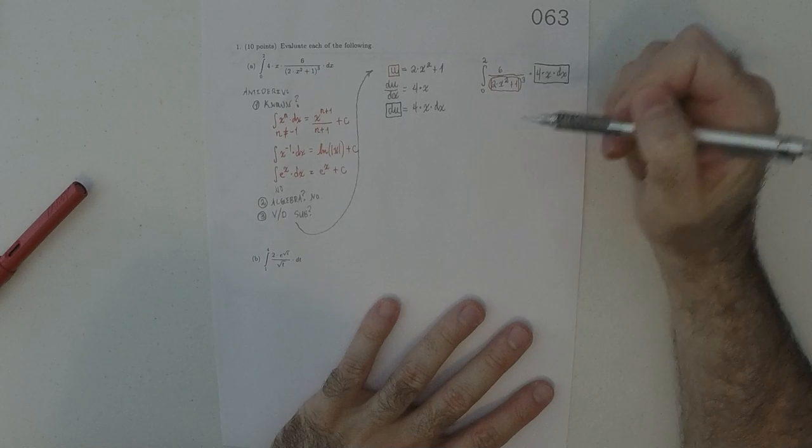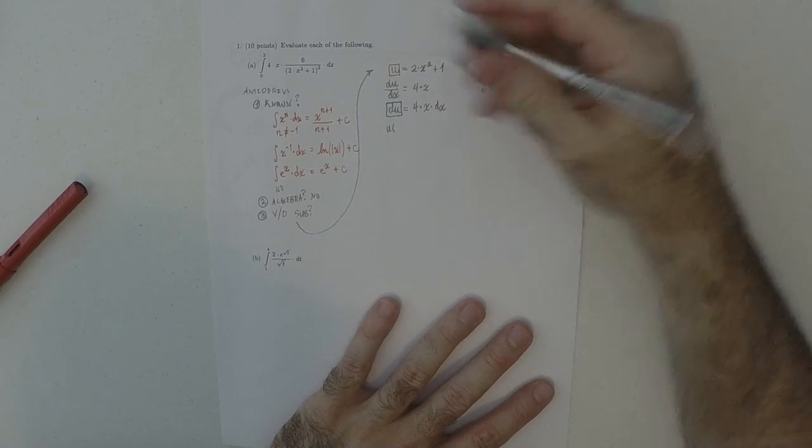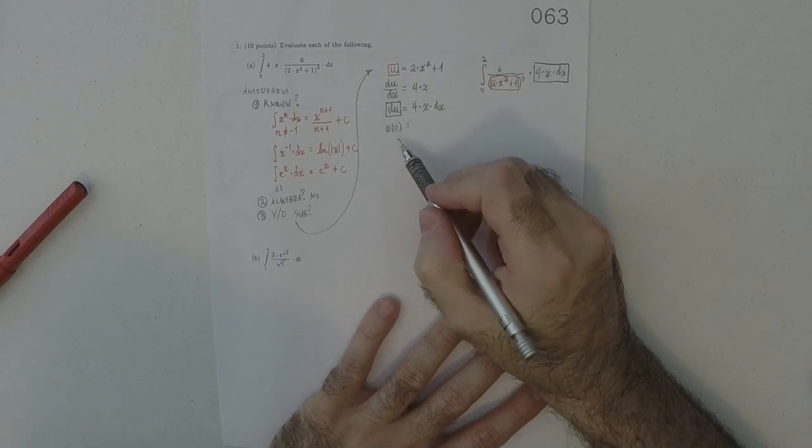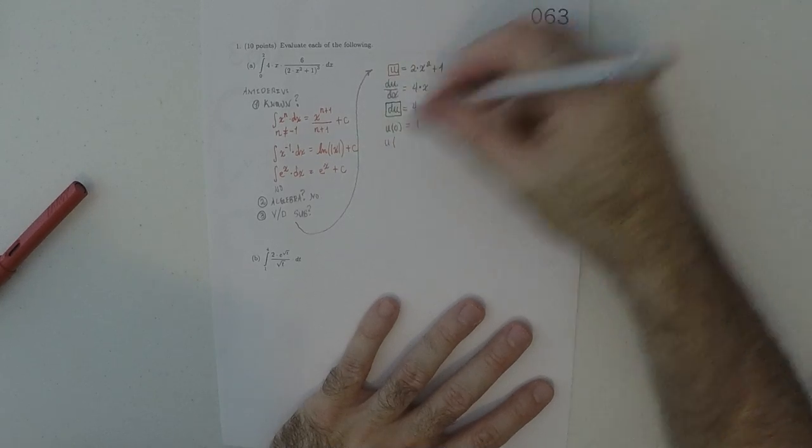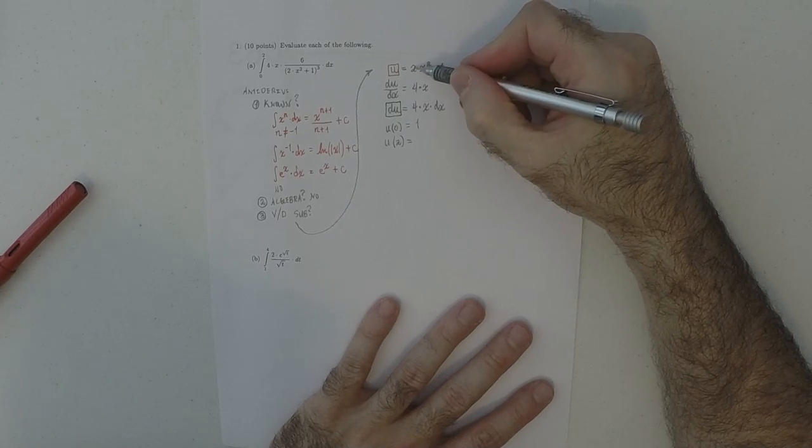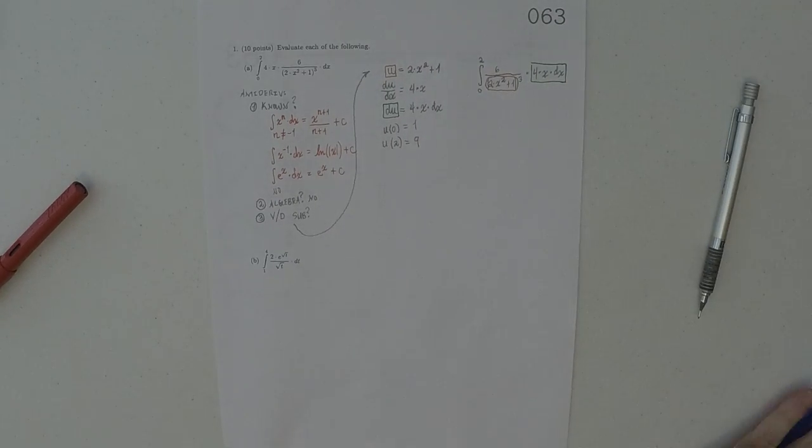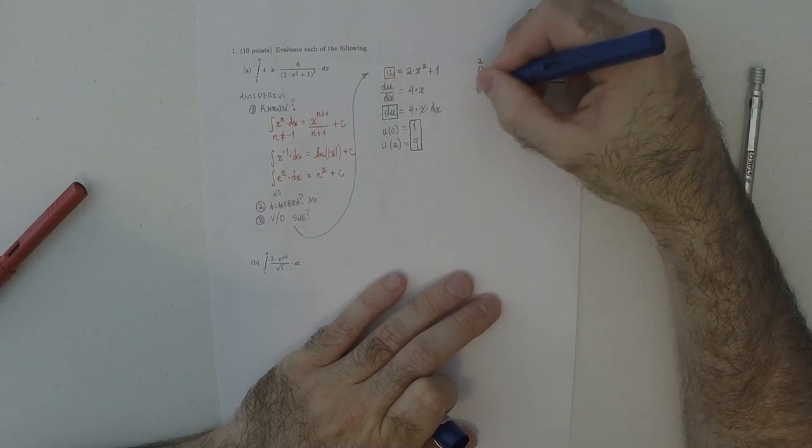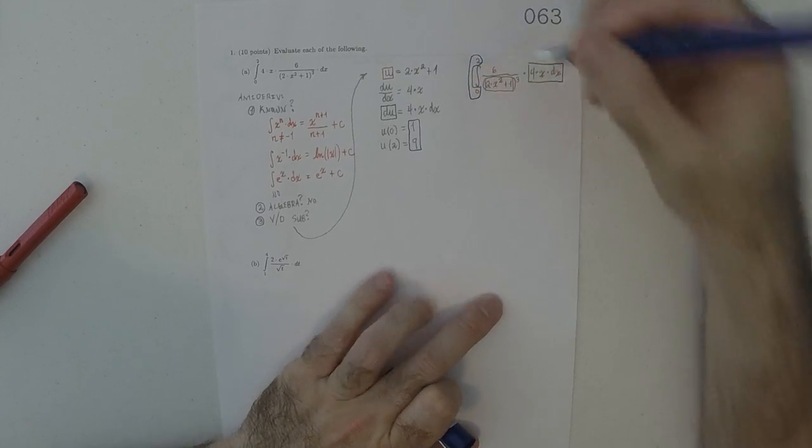And now, I'm also going to deal with the limits. So, then, specifically, when x is 0, u is 1. And when x is 2, u is, well, that'd be 4 times 2 is 8 plus 1 is 9. So, that'd be 9. So, you know, this information, 1 and 9 is going to replace these limits.